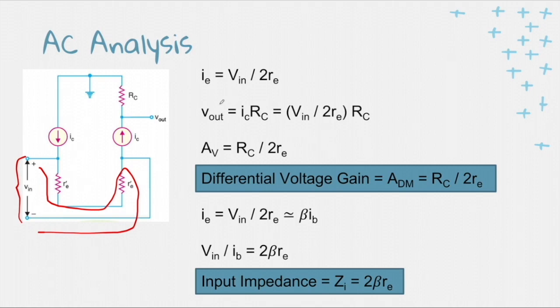To solve for the V output, it's just IC times RC. And since IC is equivalent to IE, we'll just have to substitute this. And we'll end up with this equation. Vout is Vin over 2re times RC.